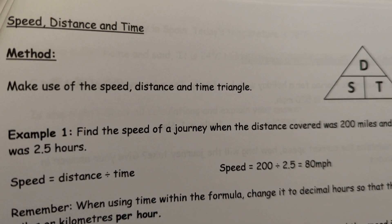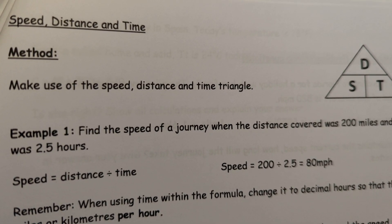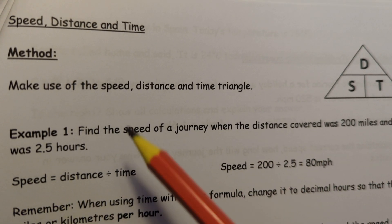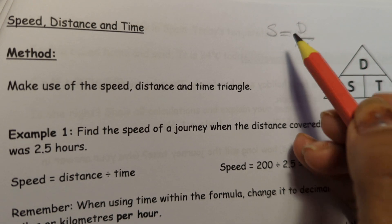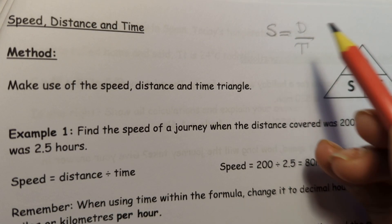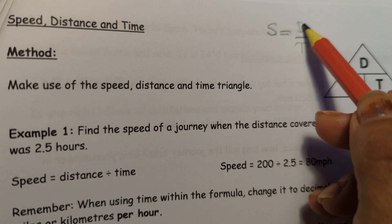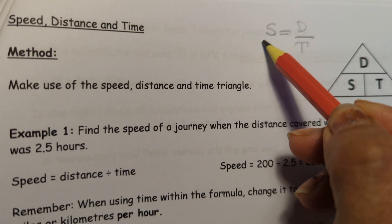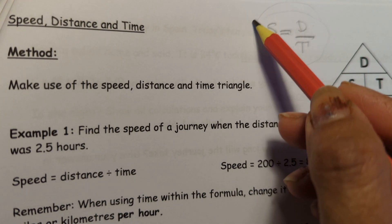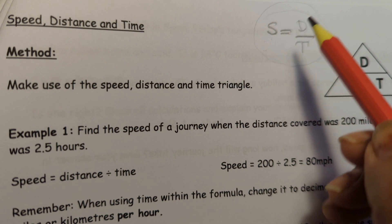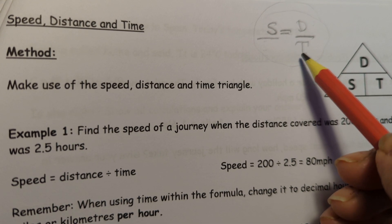In this video we will learn about the relationship between speed, distance, and time. The formula we have to remember is speed equals distance divided by time. We can use this formula when two things are given — if speed or time is given we can find distance, if distance or time is given we can find speed, and if speed and distance are given we can find time.